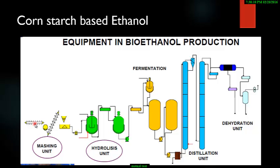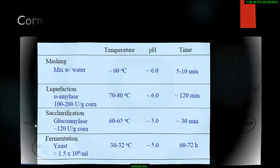In the separation stage, fiber is separated, gluten is separated, and starch is separated. The separated gluten can be dried and used for poultry feed. The liquid remaining is called steeping liquor, which can be concentrated and dried for poultry. The rest of the ethanol is obtained after the action of Saccharomyces cerevisiae, followed by distillation.